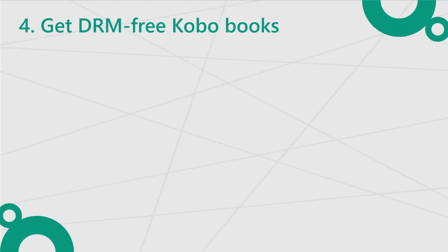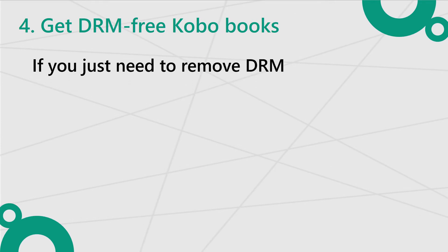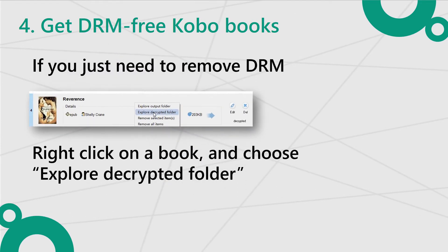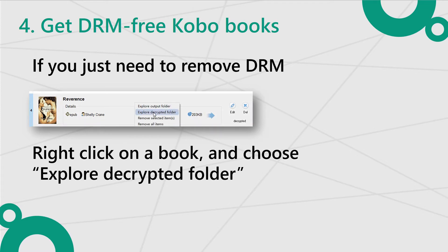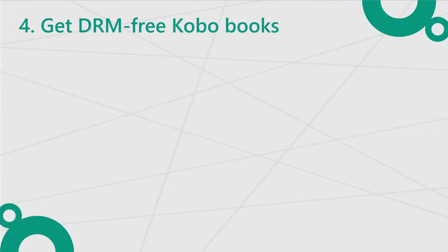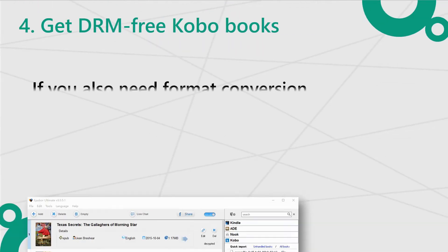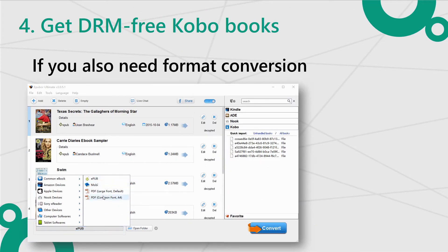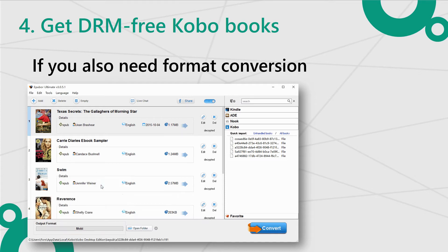If you only need the Kobo Books to become DRM-free EPUB files, just right-click on the blank space of any decrypted book, then choose Explore Decrypted Folder. If you need to convert your Kobo Books to other formats, like Mobi or PDF, please choose the output format you want, then click Convert.